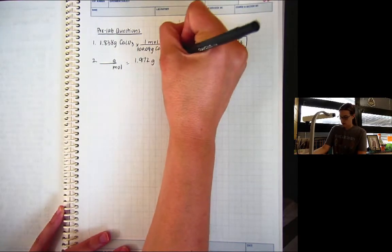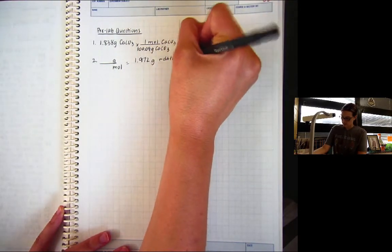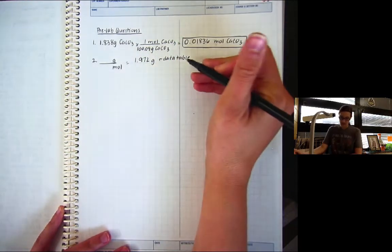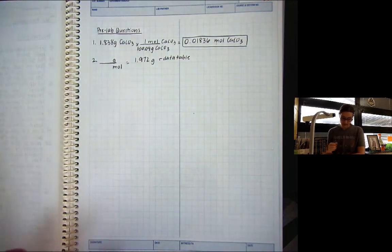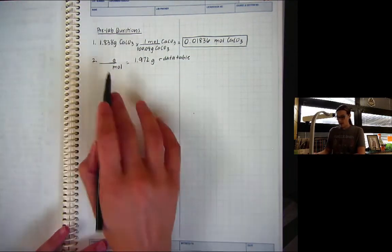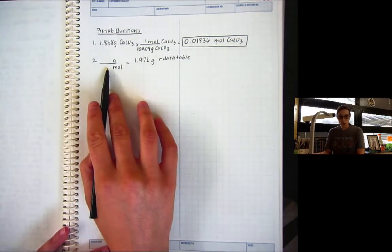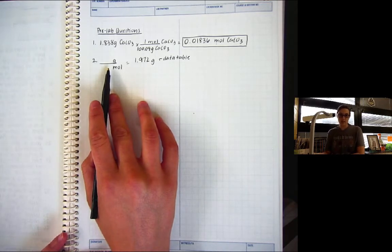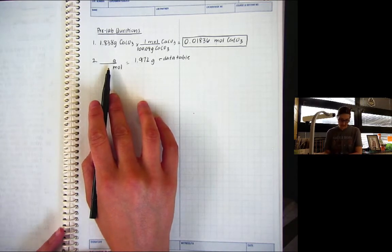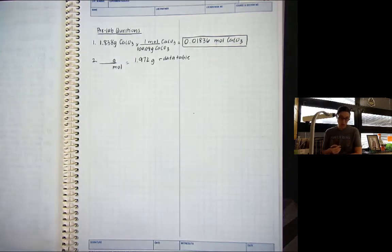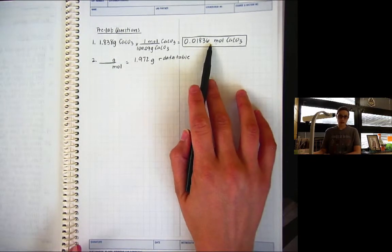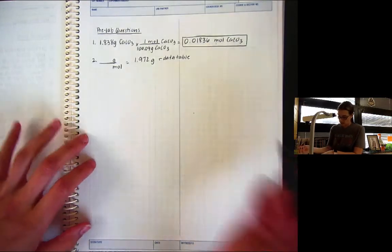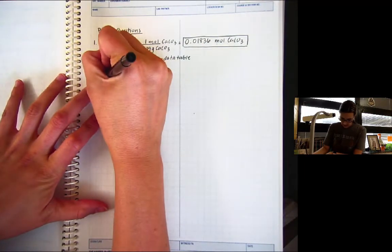Again, this is from the data table. And to figure that out, I subtracted the mass of the crucible plus the unknown minus just the mass of the crucible. Now what I need to do is I need to figure out how many moles was this then? How many moles of unknown was this? And so to determine the number of moles, we're going to stoic. So we're going to stoic from moles of CaCO3. I'm going to do that down here.